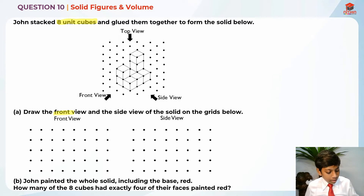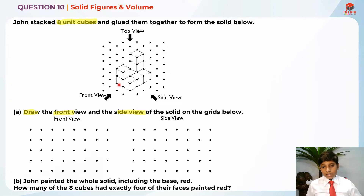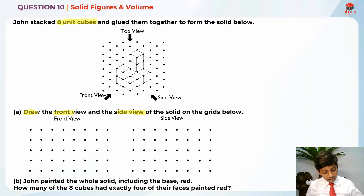They are giving us the top view — if we look from up to down, it's the top view. And this is the front view: if we turn this thing around, it will give us the front view — basically whatever you see on this side. And this is the side view — whatever you see on this side. So we are supposed to draw the front view and the side view. The front view is basically whatever you see from this angle. We are only looking at the faces.